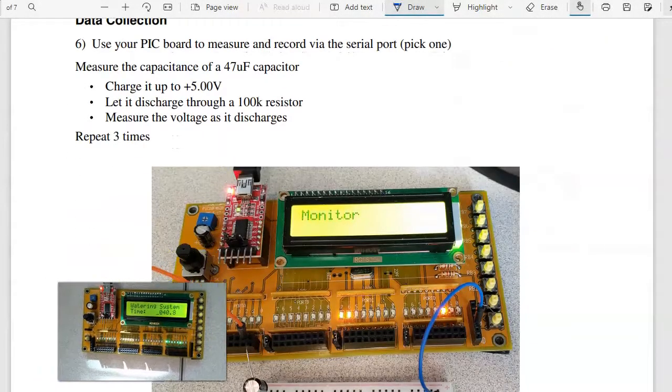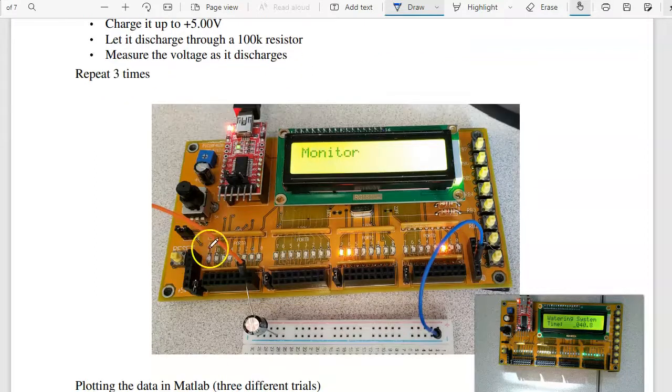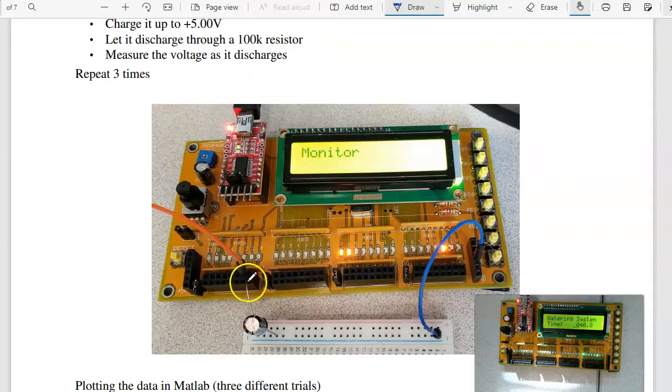Problem six is data collection. I can use my PIC to collect voltages. And what I'm going to do is I'm going to measure the capacitance of a 47 microfarad capacitor. So here's what I'm going to do. I'm going to read port A pin 1. Here's my 47 microfarad capacitor going to ground. I'll take this pin and tie it to 5 volts, charge it up to 5 volts, then let it discharge.